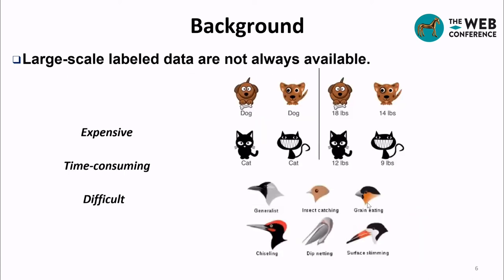However, in many real-world applications, large-scale labeled data are not always available, as labeling is expensive, time-consuming, and difficult. For example, in fine-grained recognition, only labels provided by experts are reliable. Labeling each cityscape image takes about 90 minutes in semantic segmentation, and point-wise 3D LIDAR point clouds are difficult to label.